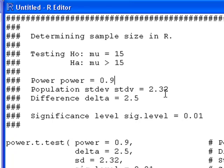I'm going to need to know the population standard deviation, which is often difficult to find, but in my case it's 2.32.